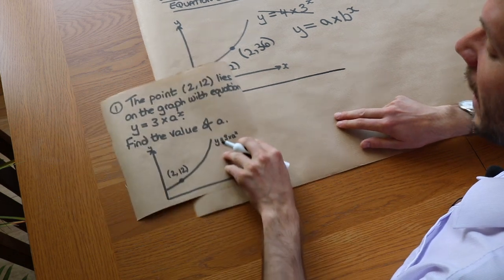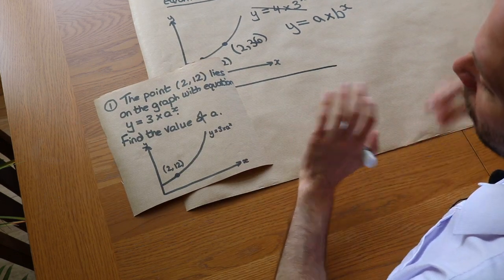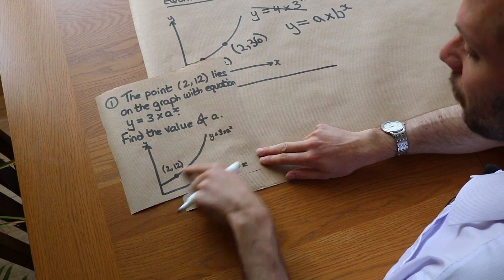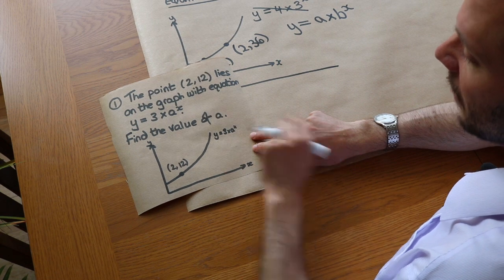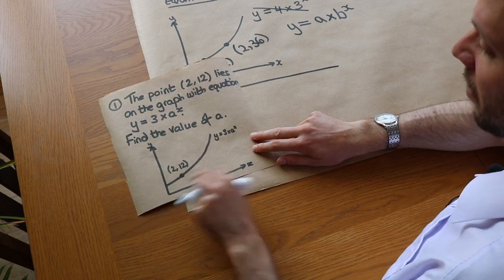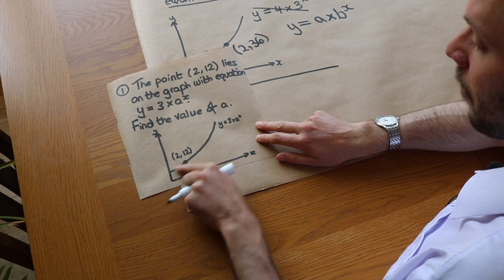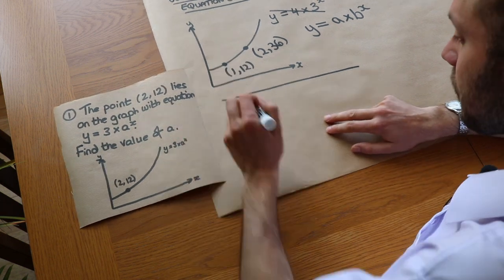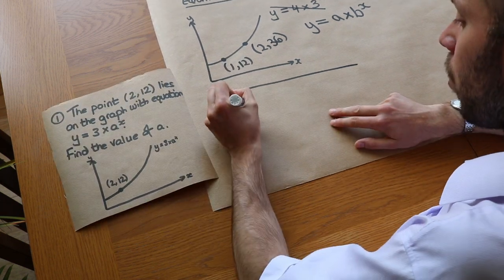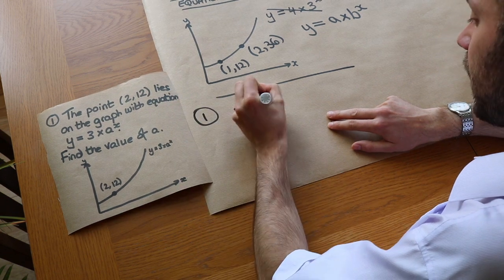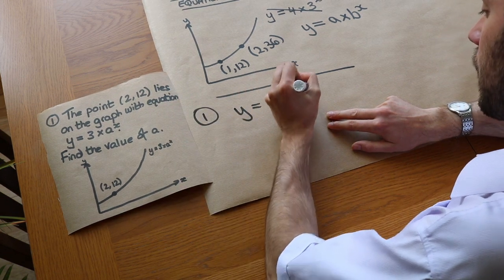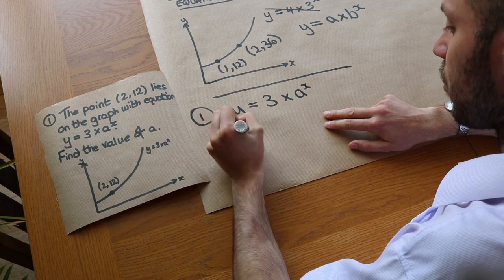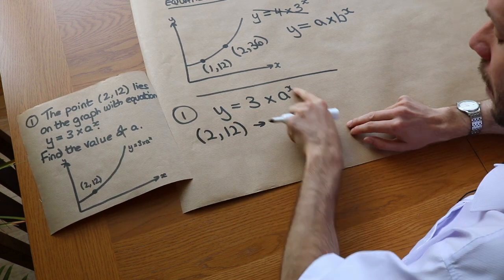The key point with all these questions is to remember the relationship between the equation of a graph and the line itself. The equation is essentially a membership rule for points belonging to that graph. So if the point (2, 12) belongs on the graph, it must satisfy the equation y equals 3 times a to the x.